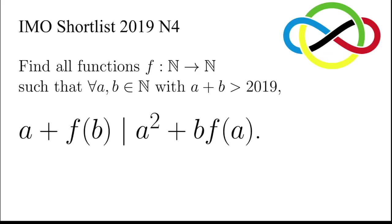Let's take a look at this problem taken from the shortlist in the IMO 2019. It says, find all functions f that maps the set of natural numbers to itself, such that for all natural numbers a, b, with a plus b greater than 2019, we have a plus f of b divides a squared plus b times f of a.